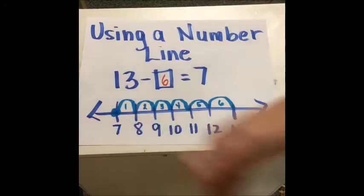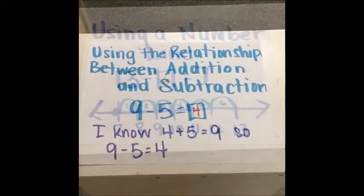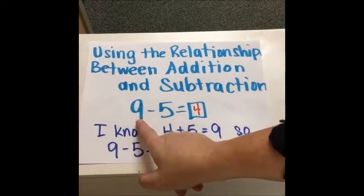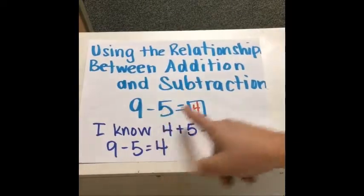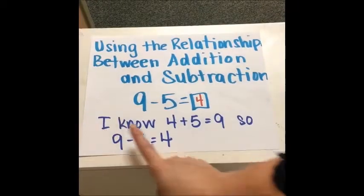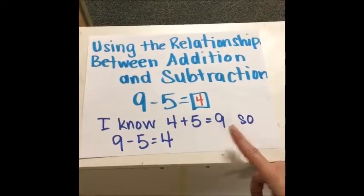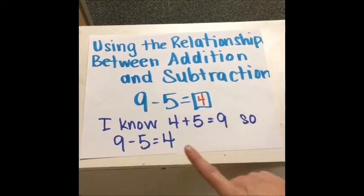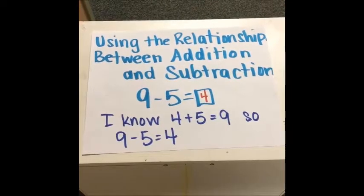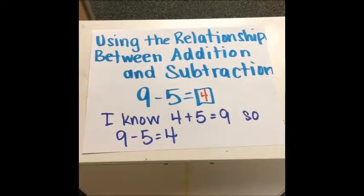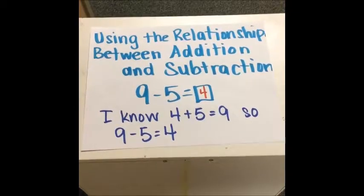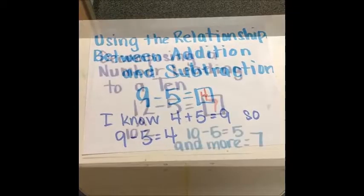Using the relationship between addition and subtraction would look like this: If a student has a subtraction problem that says 9 minus 5 equals something, they could think addition and say, 'I know 4 plus 5 equals 9, so 9 minus 5 equals 4.' It works the opposite way too. If there's an addition problem such as 5 plus 4 equals 9, they might say, 'Well, I know 9 minus 5 equals 4, so I know 4 plus 5 equals 9.'